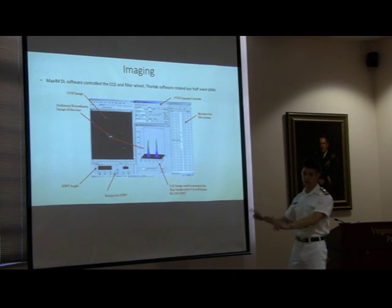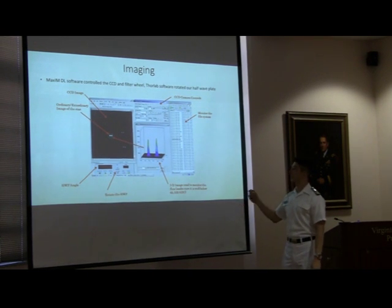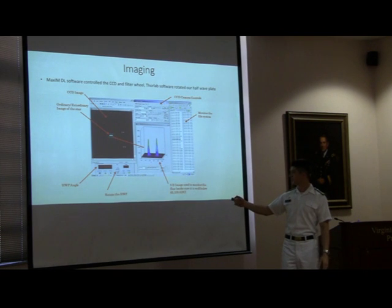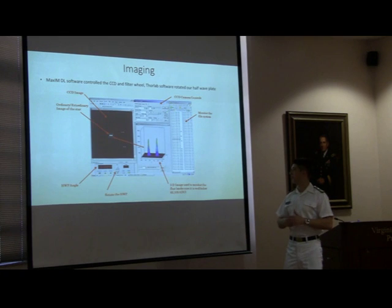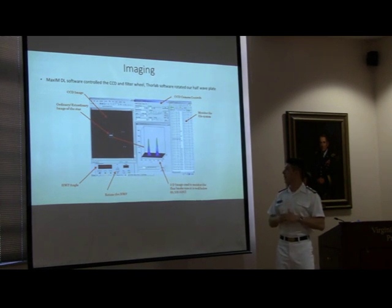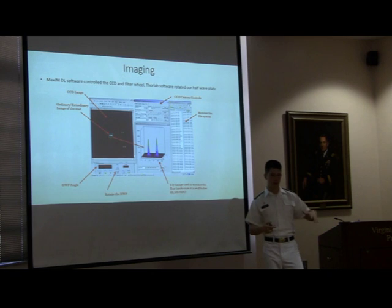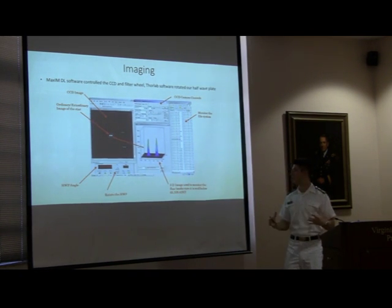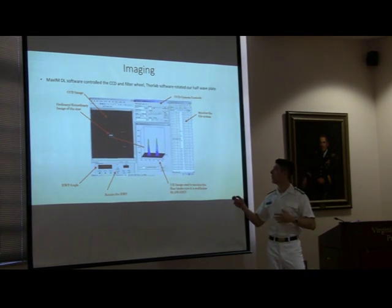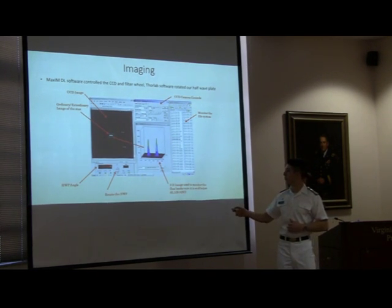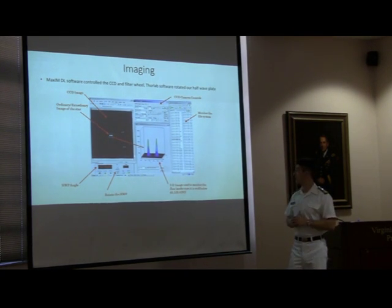Now we're at the observatory, and this is what you're going to see on the screen when you're out there. We're using MaxiDL software to control the CCD and the filter wheel, as well as Thorlab software to rotate our wave plate. You take an image and can analyze it to see if it's being oversaturated or not. We're taking the flux, which is related to the brightness of these stars, and we want to make sure they're not too oversaturated. Colonel Compton had a good analogy of filling up a bucket with water — if you overflow it, you can't pick out as many photons as you want because you're oversaturated. We keep the limit under by changing the exposure time to reduce or increase our amount. The wave plate angle is here, and we would move it to get our four different degrees that we work with.